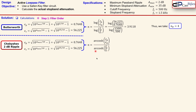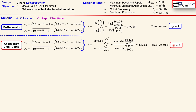Substituting the exact same values but using the inverse hyperbolic cosine instead of a logarithm gives 2.8312, so we round up to n = 3 for the Chebyshev filter. With identical specifications, the Chebyshev response requires a lower filter order, which means fewer components and a less expensive design — an important advantage when producing many units.